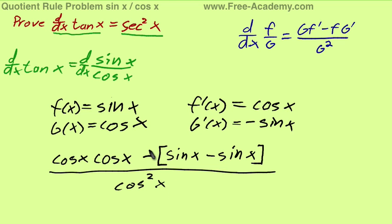Now we have a minus and a minus, so we can cancel those out. This allows me to erase my brackets. So we got cosine of x times cosine of x, plus sine of x times sine of x, over cosine of x squared.